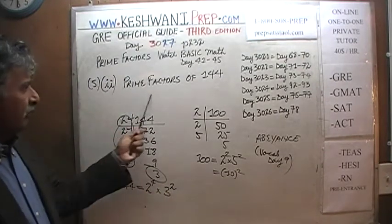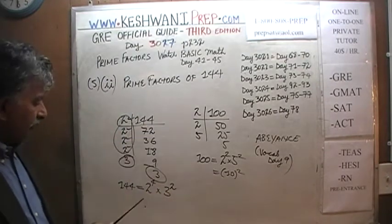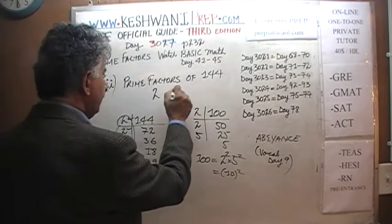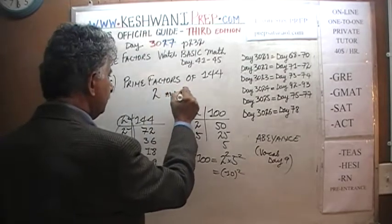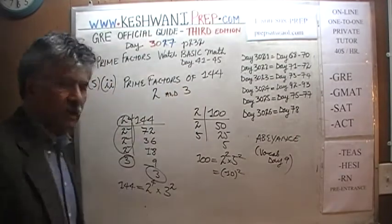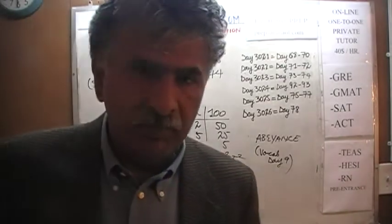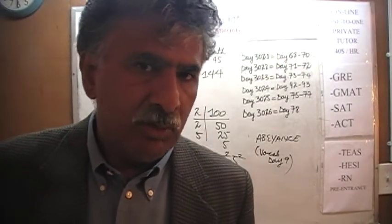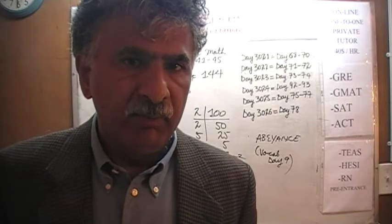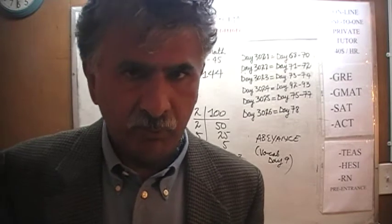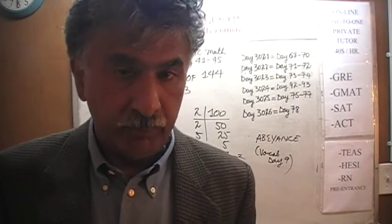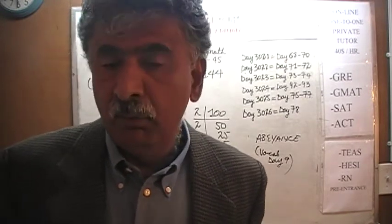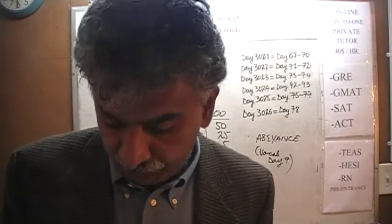So what are the prime factors of 144? It's just 2 and 3 — those are the only two prime numbers that happen to be factors of 144. Even though 144 seems like a very large quantity, it only has two prime factors.